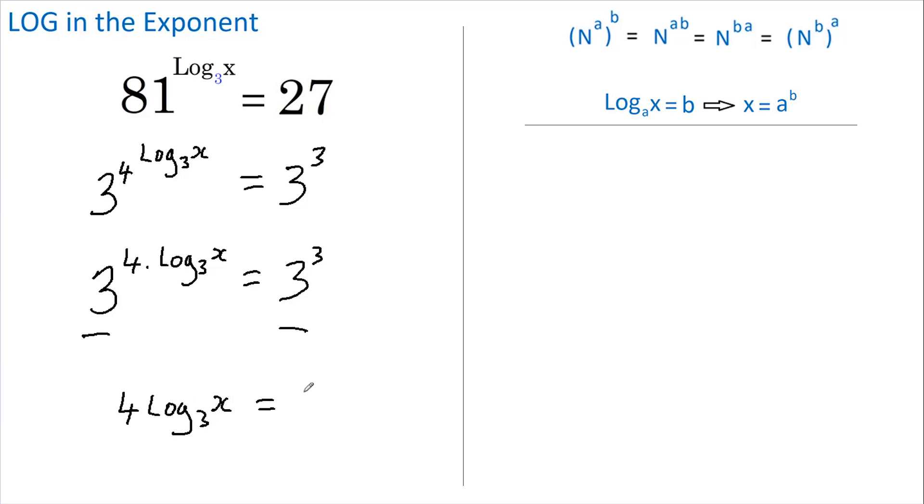Dividing both sides by 4 we get that log base 3 of x equals 3 quarters. Now if we apply the second rule we get that 3 to the power of 3 quarters equals x.